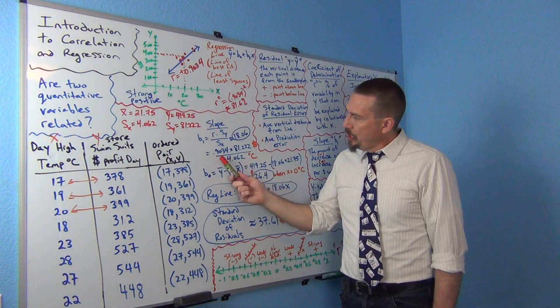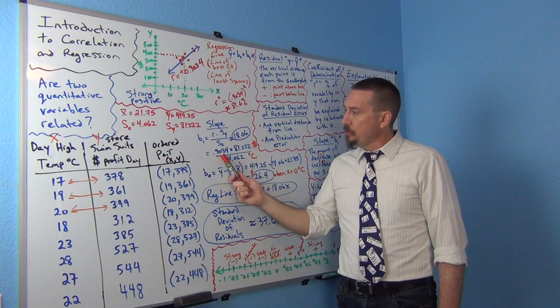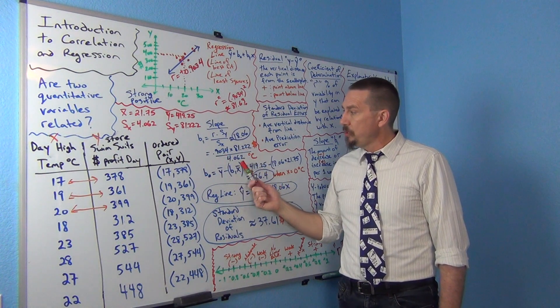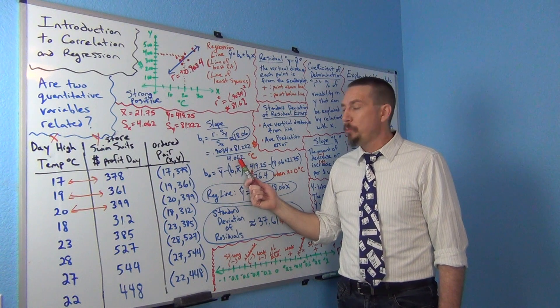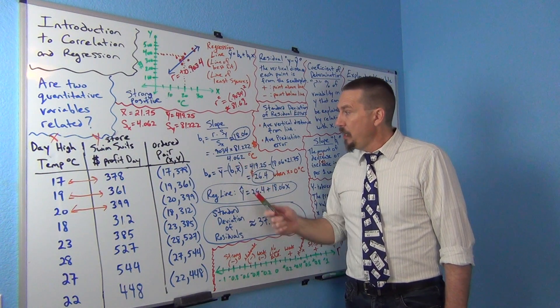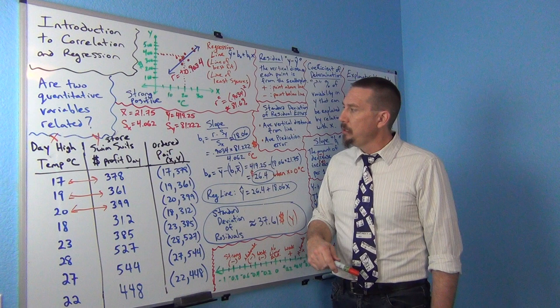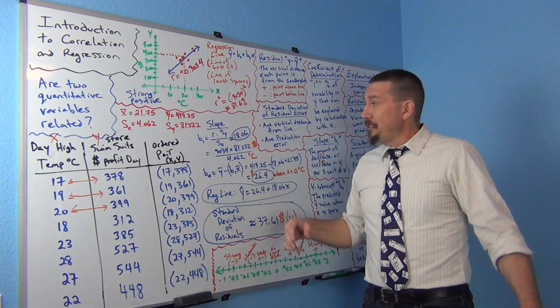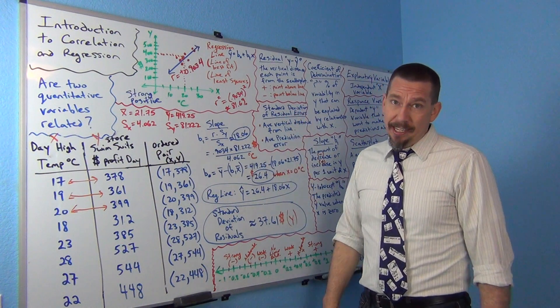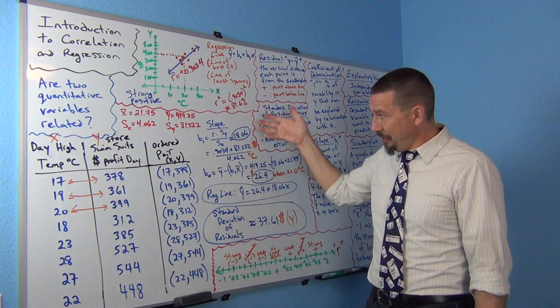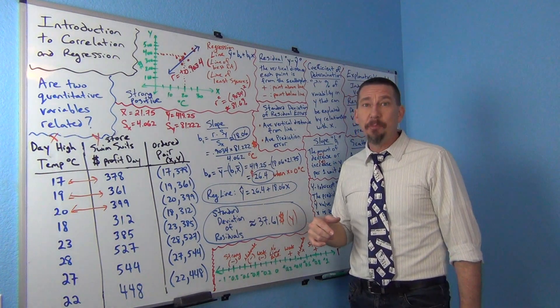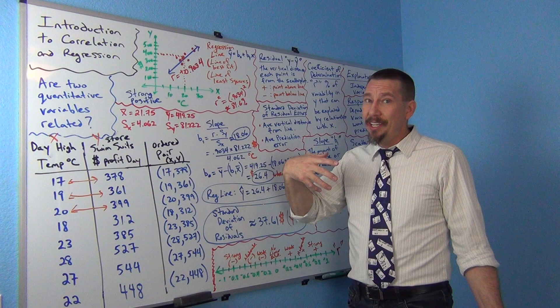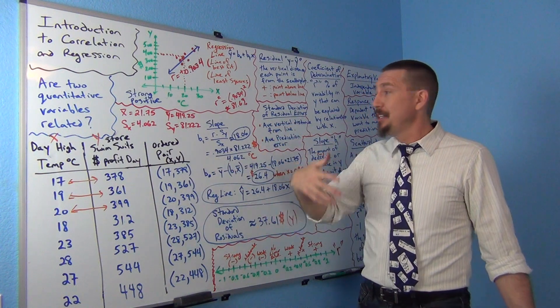So in this problem, I'm going to do the r value, 0.9034 times the standard deviation of the y's, 81.222 divided by the standard deviation of the x, 4.062. If I work that out, I get 18.06. Oh, that's great. The computer can do that in a split second. So, you know, my calculation, great. At least we can see how it was calculated, but what does it mean, right? Remember, everything in stats is all about explaining. What does it mean? What is it telling me?